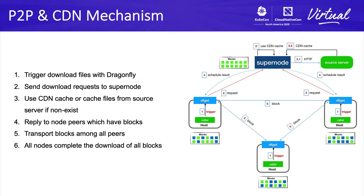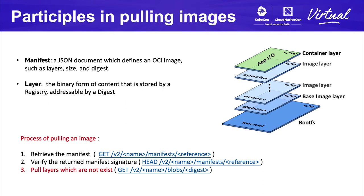I hope you now have a good understanding of Dragonfly's core principles. So far, we have been talking about file downloads. You may be more concerned about how to download an image through Dragonfly. Let's look at how Dragonfly participates in image distribution. First, we need to know what happens when we run an image pull command. According to the OCI distribution specification, the process of pulling an image involves retrieving two components: a manifest and one or more layers.